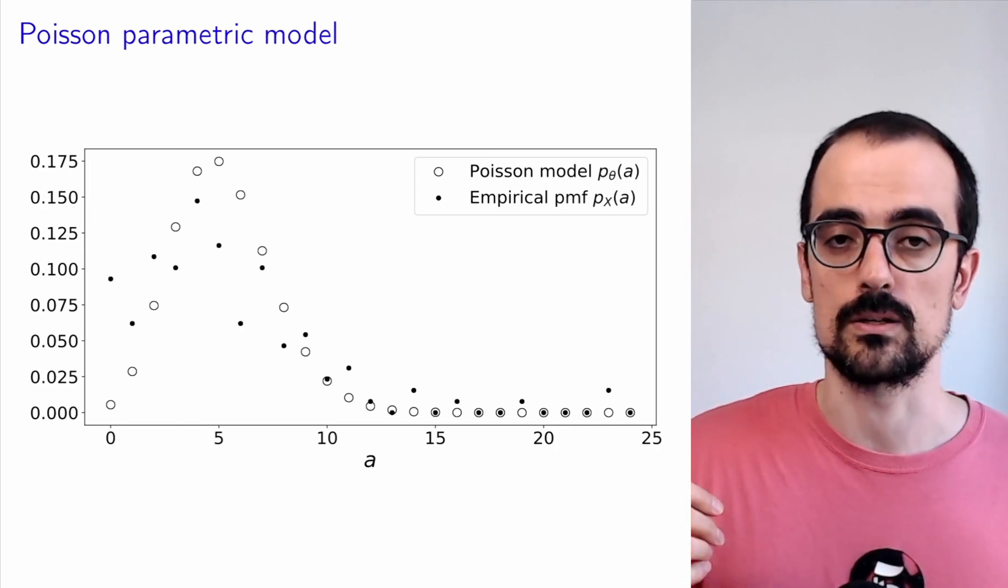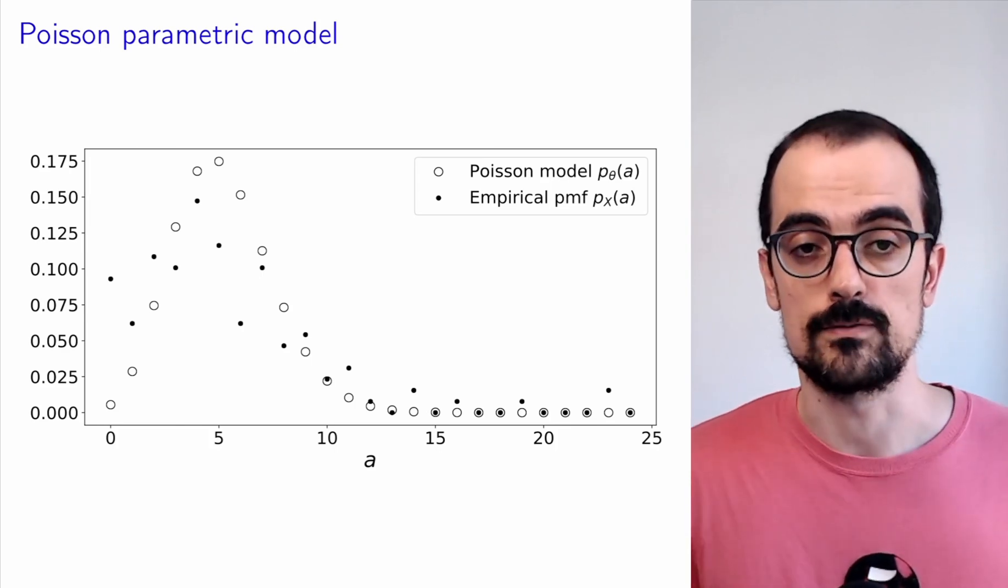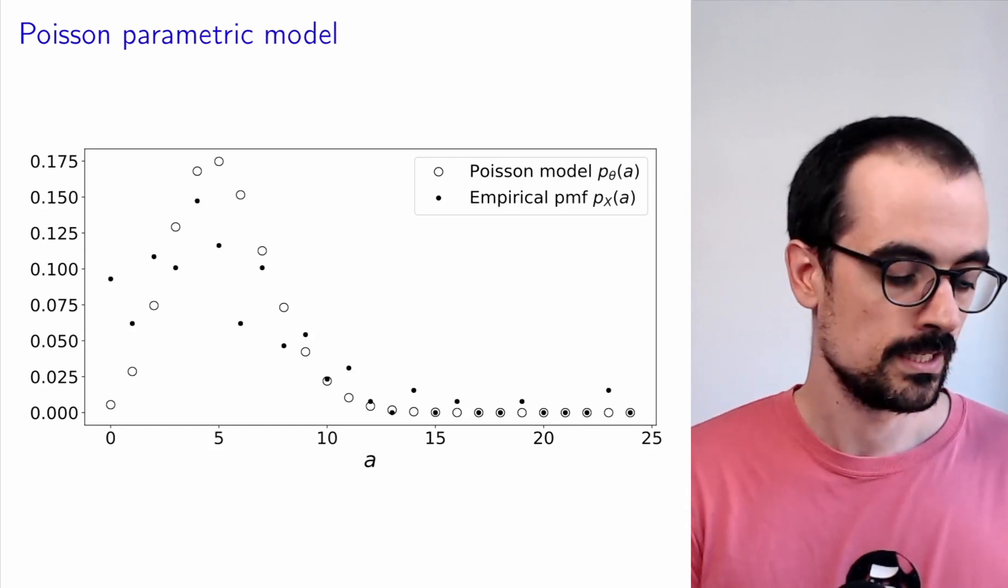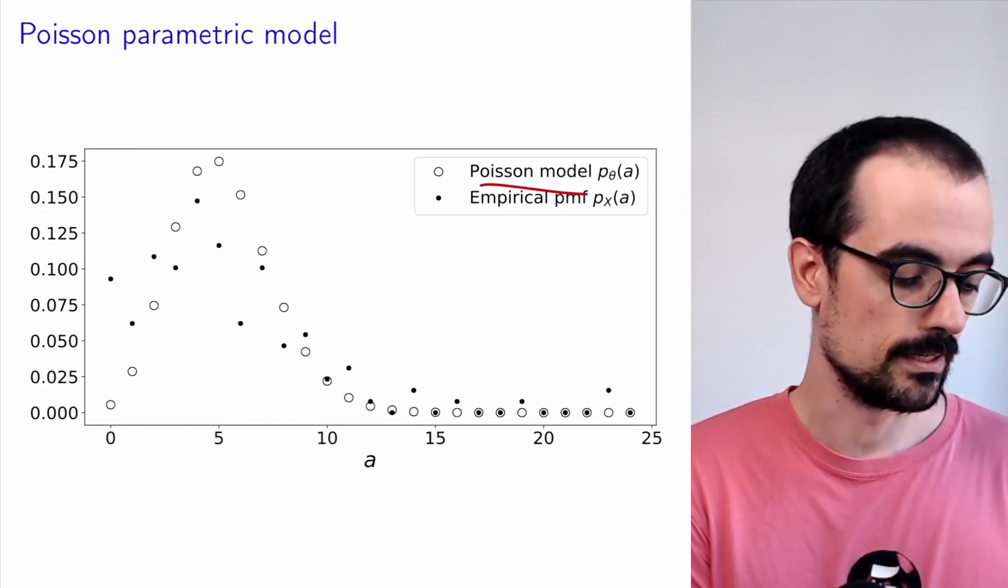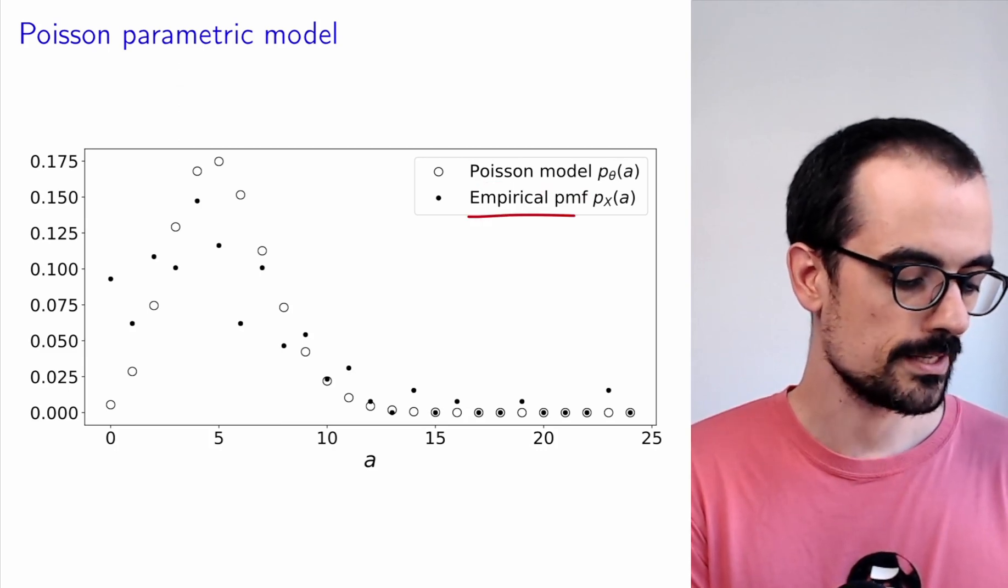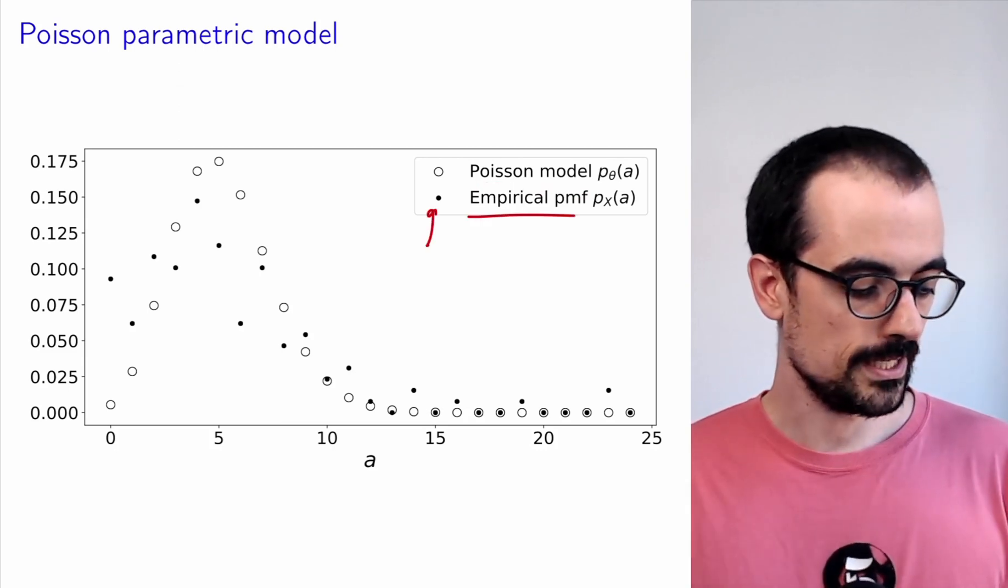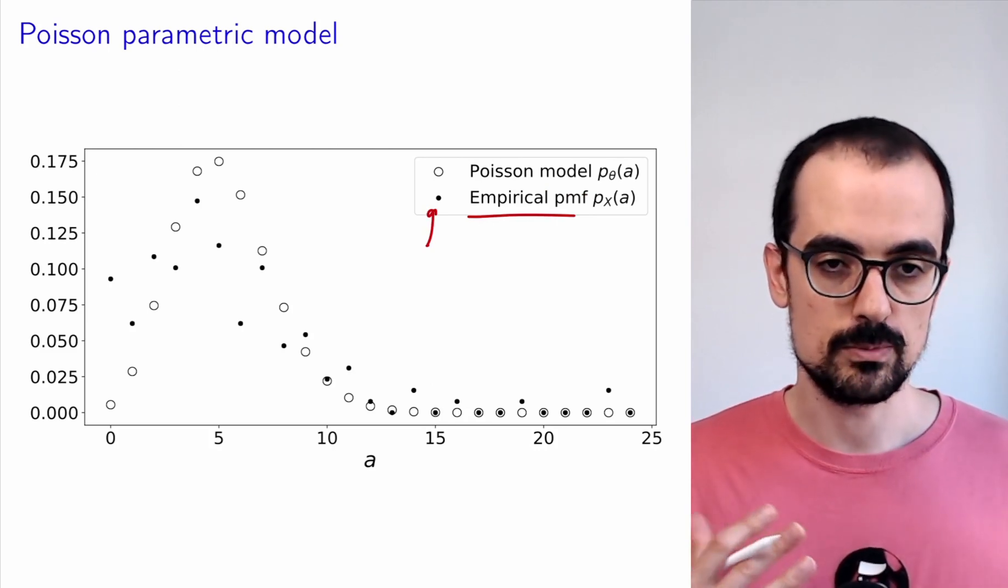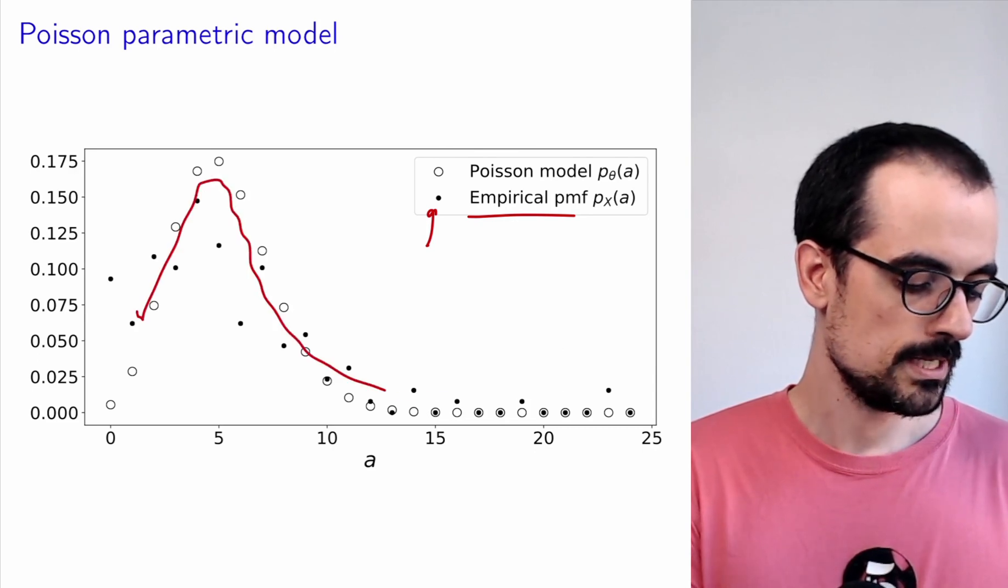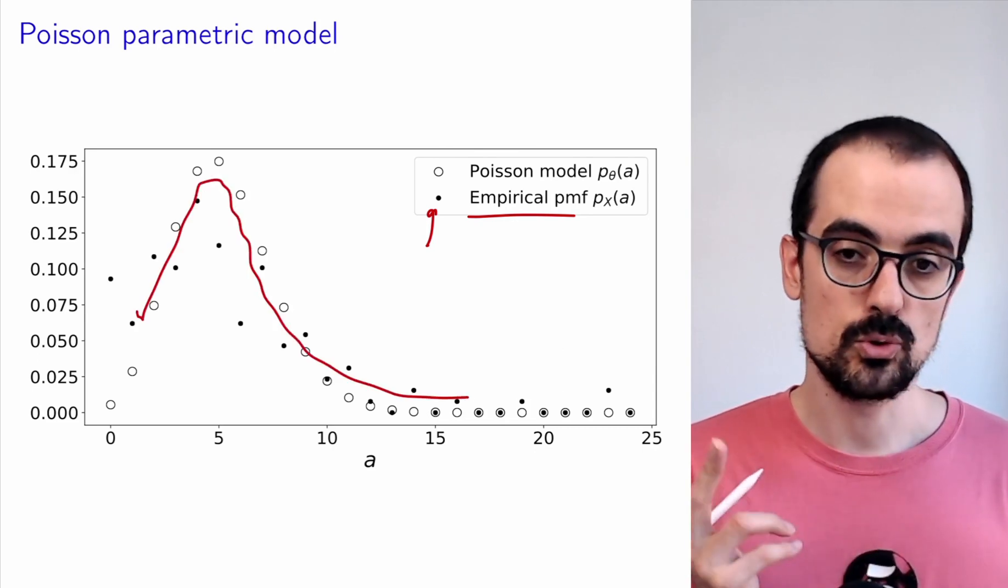We're not going to talk about how exactly we choose lambda based on the data. We're going to use maximum likelihood, which we will explain in the following video. But for now, this is the fit that we obtain. The Poisson model is shown by the white markers. The empirical PMF are the black dots. What we see here is that the parametric distribution kind of adapts quite well to the data except for two things. One, it doesn't account for the fact that you can have a large number of calls with probability relatively high.